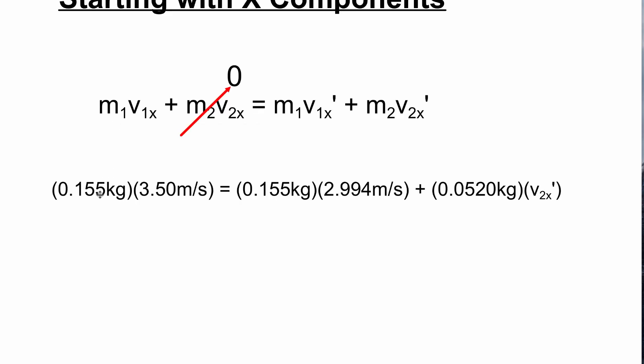The mass of ball one is 0.155 kilograms. The initial velocity is 3.5 meters per second. Ball one 0.155 kilograms. The velocity after the collision was 2.994 meters per second. Here is the mass of ball two and we don't actually know the velocity in the x direction of ball two. So that's our unknown.